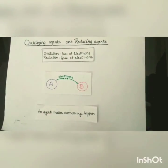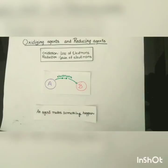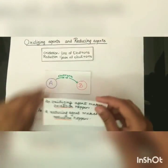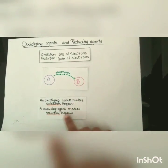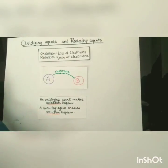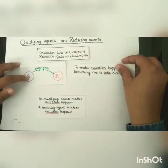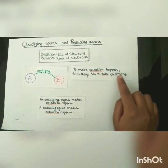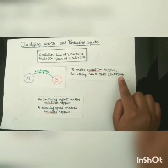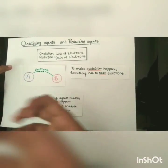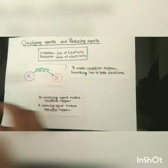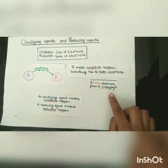So now let's talk about what an agent is. An agent is something that makes things happen. An oxidizing agent makes oxidation happen, whereas a reducing agent makes reduction happen. To make oxidation happen, something has to take electrons. Here, A is getting oxidized, so B is taking electrons from A.